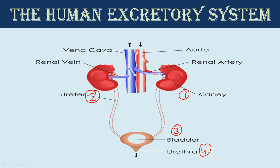Every human being has two kidneys, similar to the ureter, which is also two in number. This is called the right kidney and this one is the left kidney. Similarly, there is a right ureter and a left ureter.